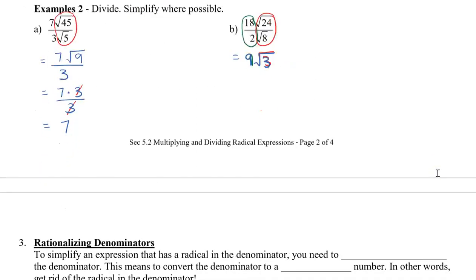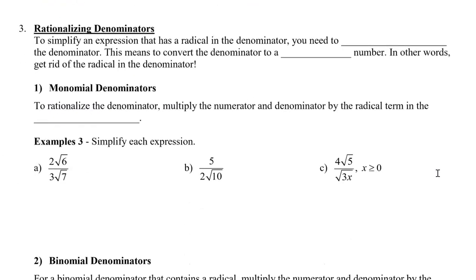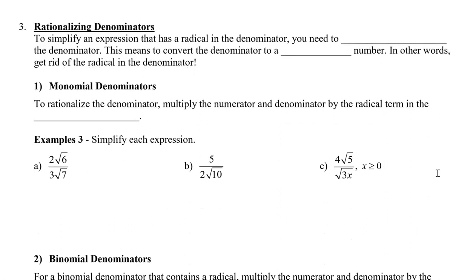Next, I'm going to show you how to rationalize the denominator. To simplify an expression that has a radical in the denominator, we're going to do something called rationalizing. This means we're going to convert the denominator into a rational number — a whole number or integer. We'll look at two cases: monomial denominators and binomial denominators.